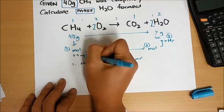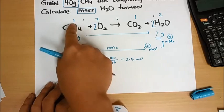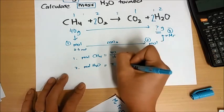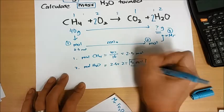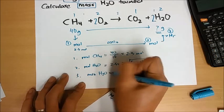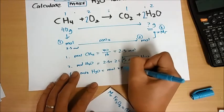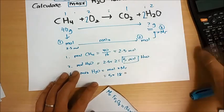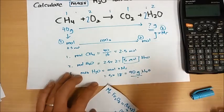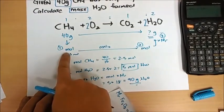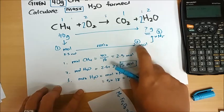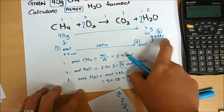If CH4 is 2.5 moles, using the ratio 1 is to 2, the mole of H2O in step 2 will be 2.5 times 2 — that is 5 moles. Since I found out this is 5 moles of water, my last step is: the mass of water equals mole times molecular mass — 5 times 18 — which is 90 grams. Step by step: 1) find the mole, convert mass to mole; 2) use the mole ratio 1 is to 2; 3) times the MR — molecular mass of 1 unit — to get the mass.